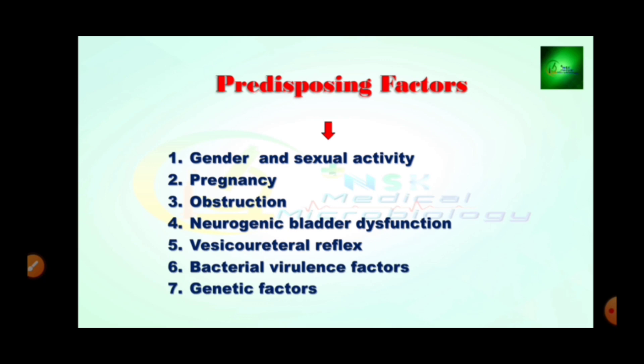The fifth predisposing factor is vesicoureteral reflux, which is present in infants and children, creating a higher risk of UTI infection in this group. The sixth is bacterial virulence factors — in the case of bacteria, virulence factors such as pili and fimbriae are important; some bacteria also secrete toxins that cause UTI infection. The last predisposing factor is genetic factors.